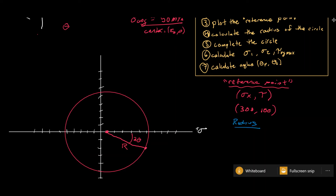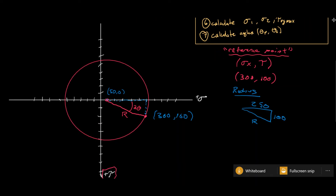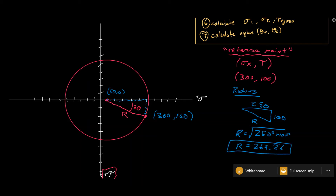We can find the radius using trig. The point we plotted is (300, 100) and the center is at (50, 0). The horizontal distance is 300 minus 50, which is 250, and the vertical distance is 100 minus 0, which is 100. So the radius is the square root of 250 squared plus 100 squared, and we get a radius value of approximately 269.26 megapascals.